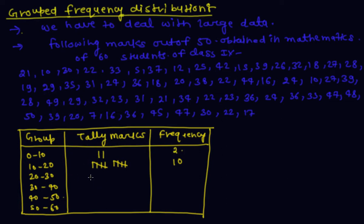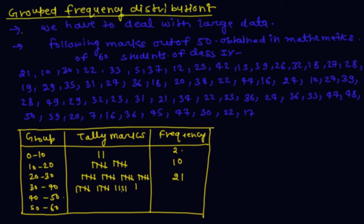For 20 to 30, counting gives a total of 21 entries or observations. For 30 to 40, counting gives 19 entries. For 40 to 50, only 7 entries — so the frequency is 7. For 50 to 60, only 1 student. If I total all these frequencies, it comes to 60.